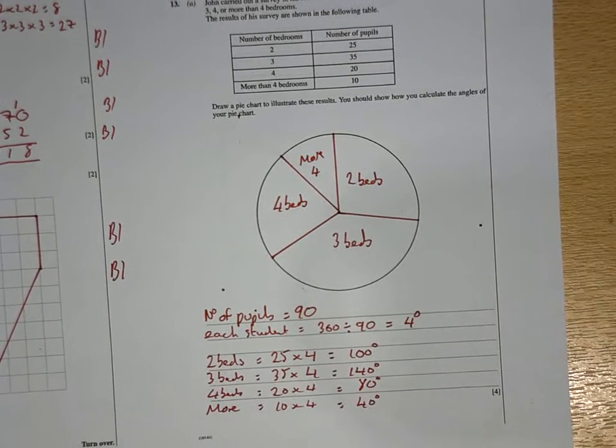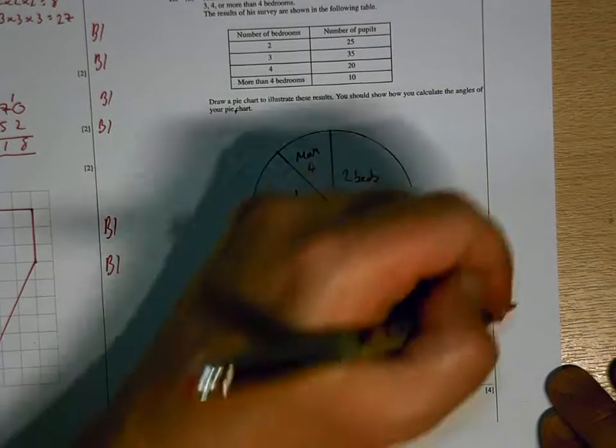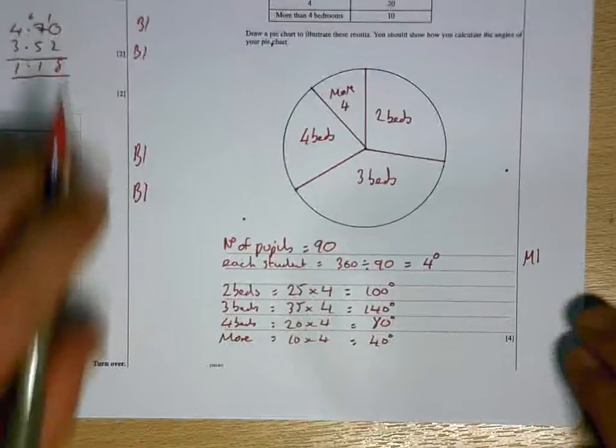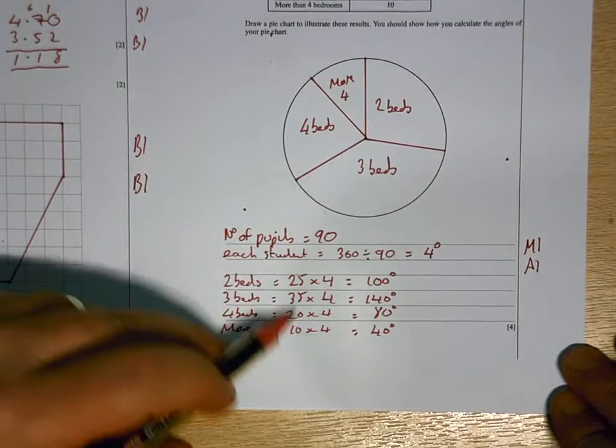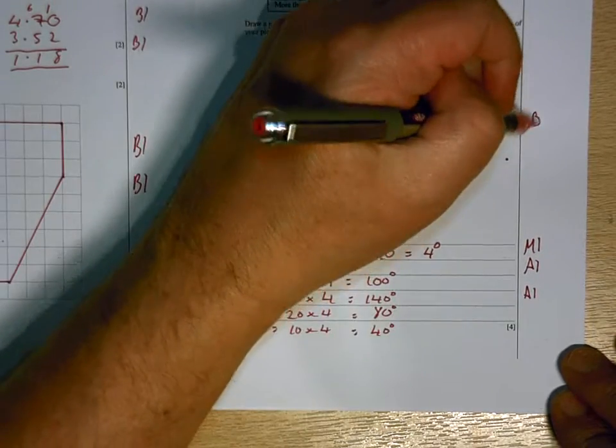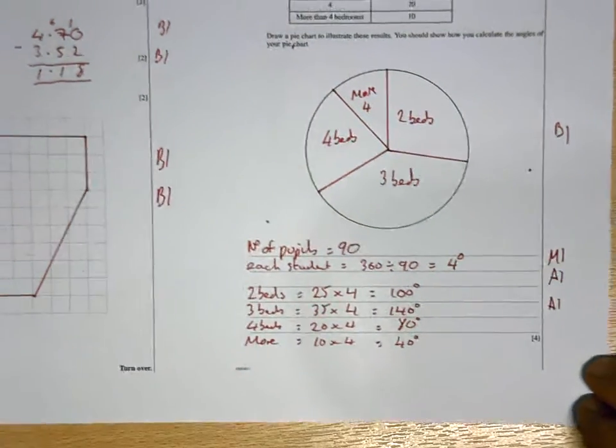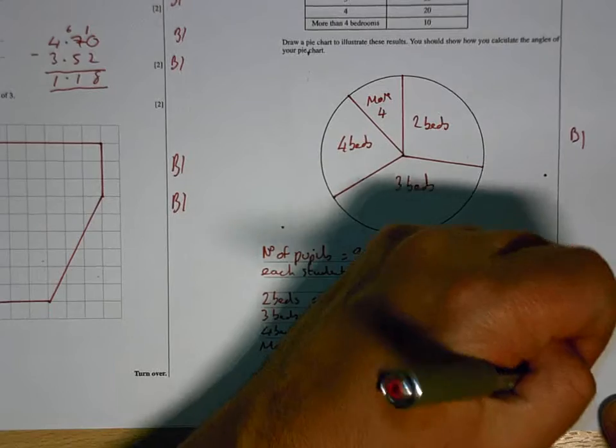The method is the same every time. Number of pupils, size for each student. And then 1 mark for working out the rest of the angles, and then 1 mark for actually drawing the pie chart and labelling it. So the total for that page is 4, 6, 8, 10 marks.